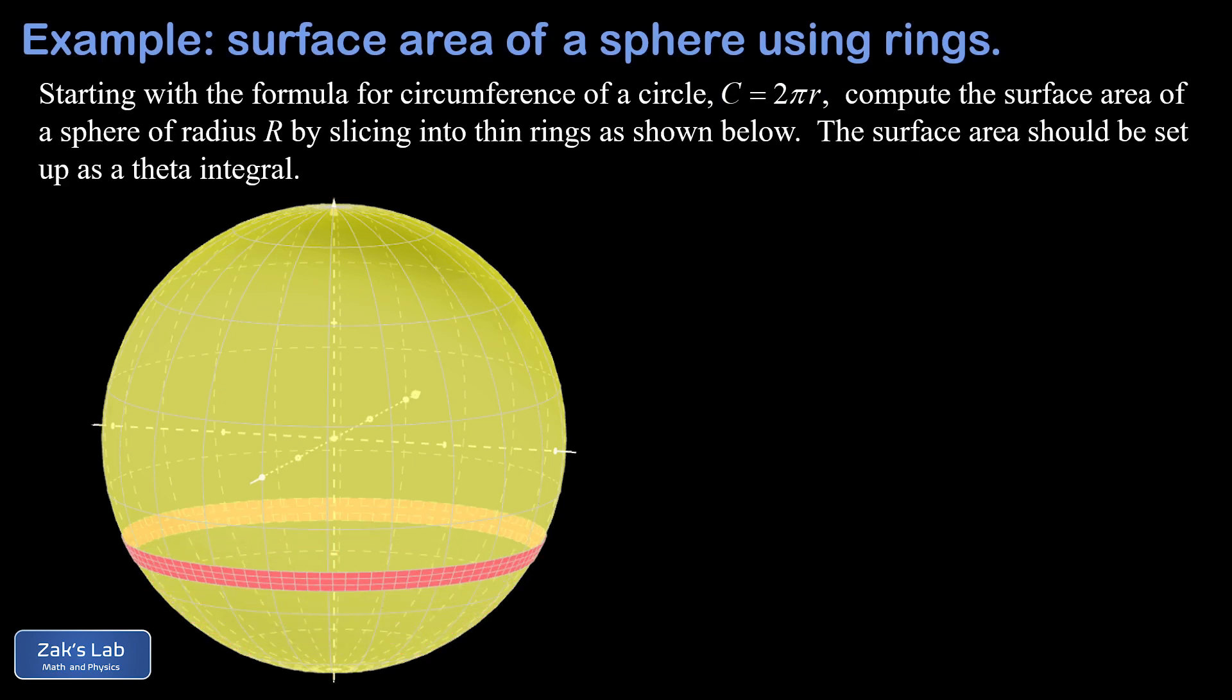The rings eventually reach a maximum radius at the equator of the sphere, and then they begin to shrink again as we get closer to the north pole where theta equals pi over two.